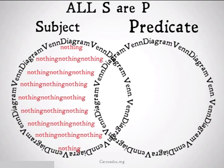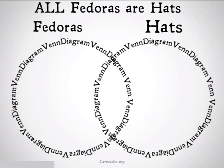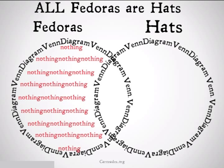Because basically what all S are P is saying is that there is nothing that is a subject but not a predicate. To understand this a little bit better, let's take a look at an example. If we said all fedoras are hats, and we wanted to represent this in terms of a Venn diagram, we would shade in the side where things are fedoras but not hats. Because if all fedoras are hats, it doesn't make sense for there to be something in the circle that's fedoras but not in the circle that is hats.